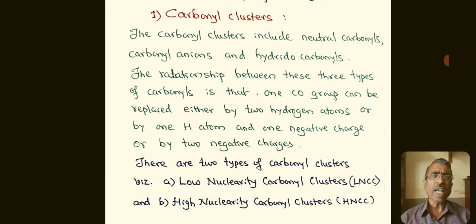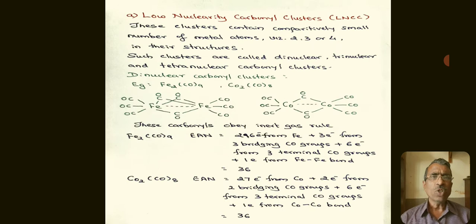There are two types of carbonyl clusters. The first is low nuclearity carbonyl clusters. These clusters contain a comparatively small number of metal atoms, namely two, three, or four in their structures. Such clusters are called dinuclear, trinuclear, and tetranuclear carbonyl clusters.